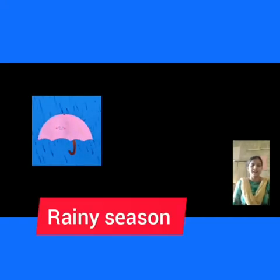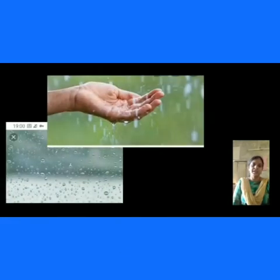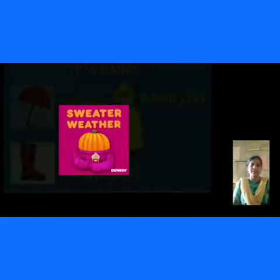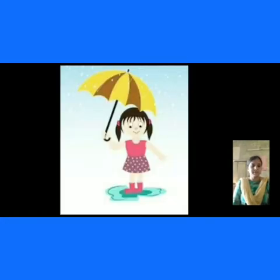First one is rainy season. The climate in rainy season is very cool. What type of dress can you wear in rainy season? We can wear raincoats and jackets in rainy season. Also, colorful umbrellas we can see in rainy season.